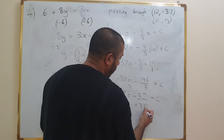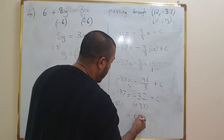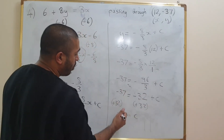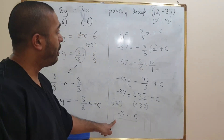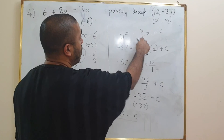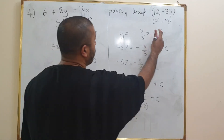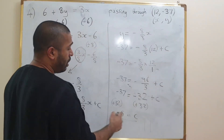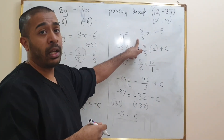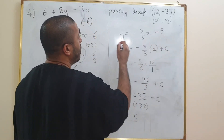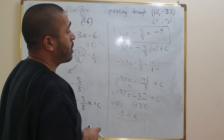Add 32 to both sides — that cancels out, giving us c equals negative 5. So our value for c is negative 5. The gradient is minus 8 over 3. Plugging in the c value, instead of plus c it's going to be minus 5. So our final answer is y equals minus 8 thirds x minus 5.